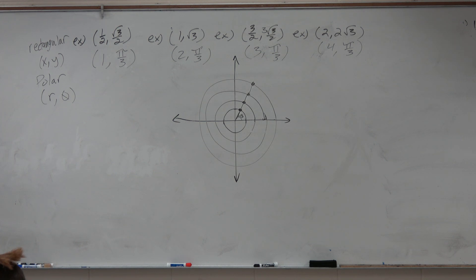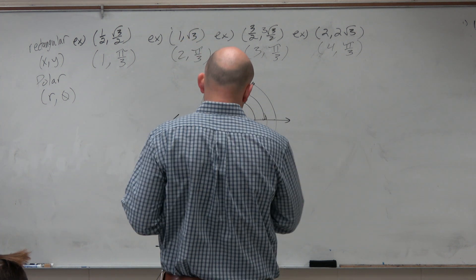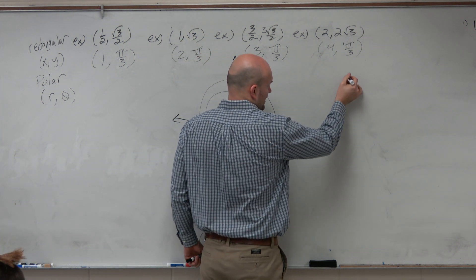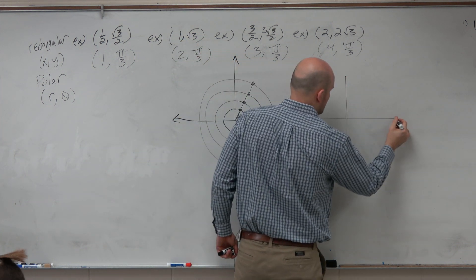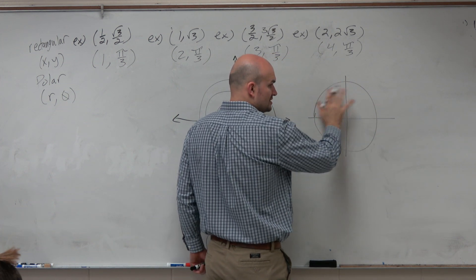We talked about our rectangular and polar points. Now let's look at the unit circle again and understand a random point on it. This is the unit circle.